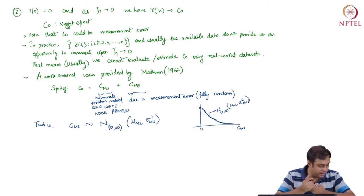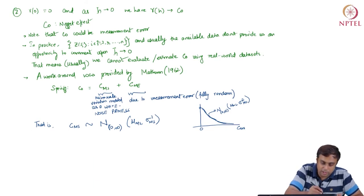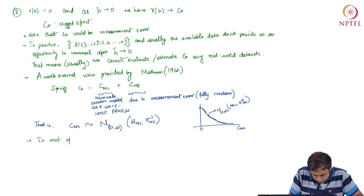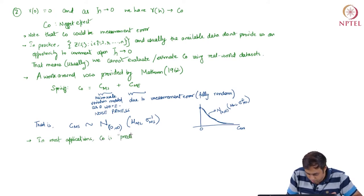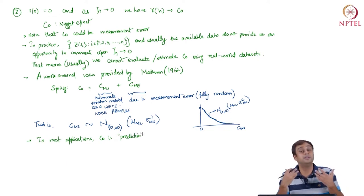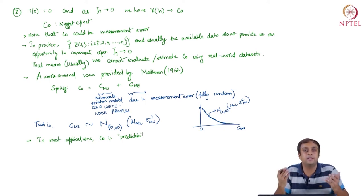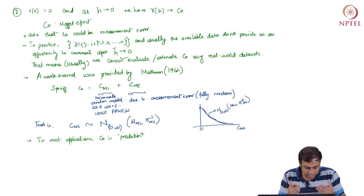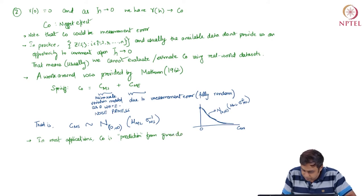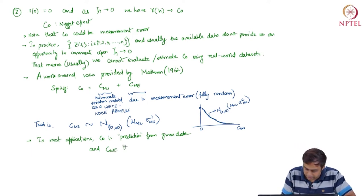In most practical applications, C0 is predicted from given data and CME is assumed to be 0. We will conduct prediction — exploiting the spatial contiguity structure — for C0 from given data. Unless we have information about where measurement error could arise from, we will assume CME to be 0.